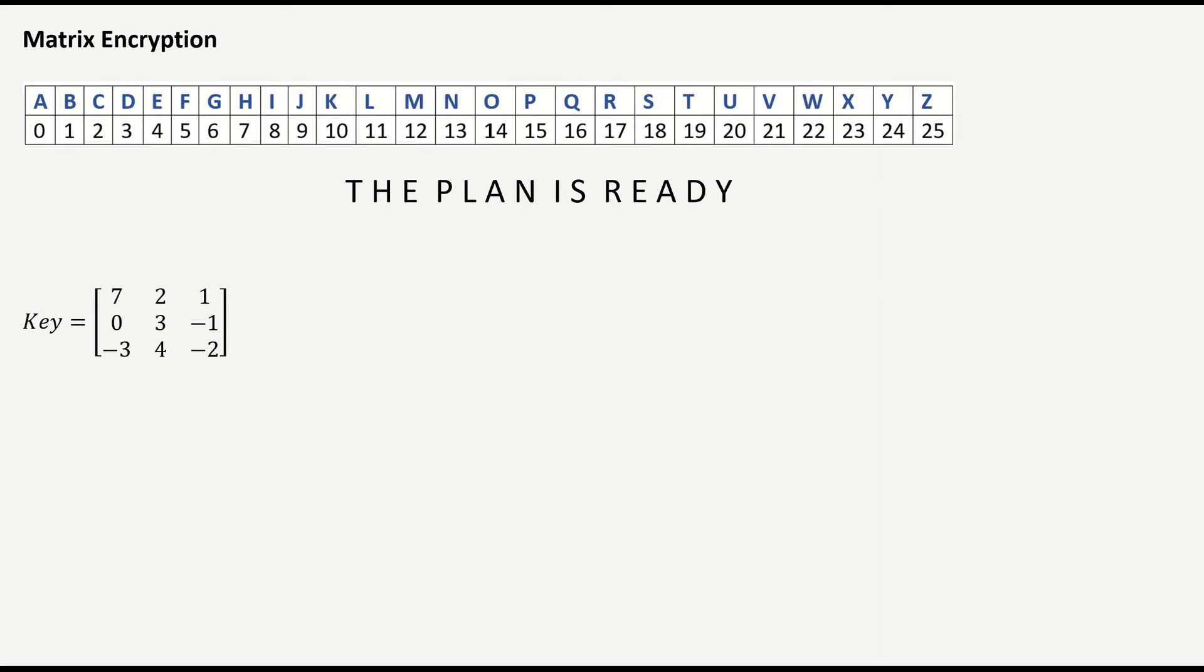So I convert each letter into the number. So let's go through that. T is 19, 18, H is 7, E is 4, 15, 11, 0. So I'm letting A equal 0 to start it off, which would mean Z is 25, 18, 17.